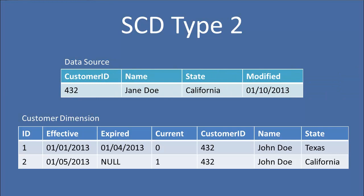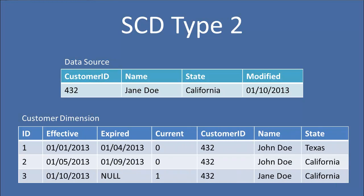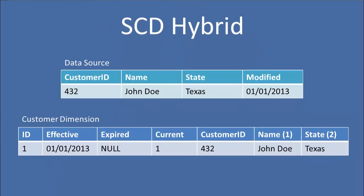Let's do the same thing again. Let's say our source system changes once more, but this time it's our name that changed — now it's Jane Doe, and this change occurred on the 10th. The same thing happens: we expire the current version of that record in our dimension and create a new record. Record number two now becomes expired on the 9th, and we have a new record that's effective as of the 10th, which is now our current record, showing Jane Doe in California. So what if we have some attributes we want to track as type 2 and some as type 1? Well, that's a hybrid dimension.